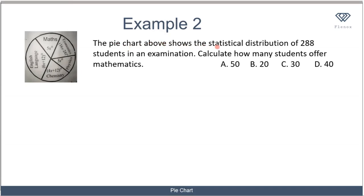Let's look at another example. The pie chart above shows the statistical distribution of 288 students in an examination. Calculate how many students offer mathematics. We are given the angle of each sector and told to find the number of students that offers mathematics. The first thing we need to do is find the value of x so we can calculate the angle of the mathematics sector. We know that the sum of all these individual sectors must equal 360 degrees.